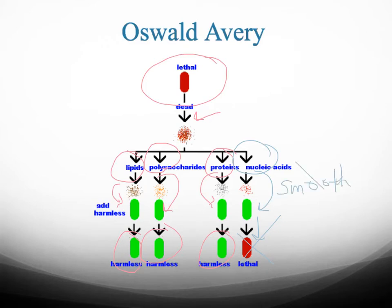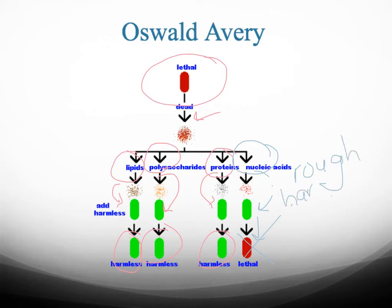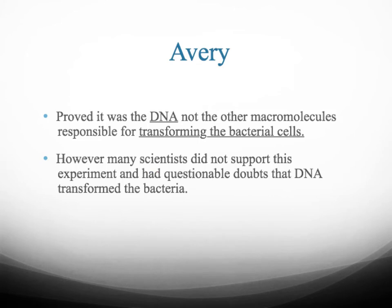He transformed the rough bacteria that were harmless. He actually took blood out of the mouse, and when he replated the cells on a Petri dish, they were actually smooth. So that is the transforming factor — the nucleic acids. Avery proved it was DNA, not the other macromolecules, that was responsible for transforming the bacterial cells.